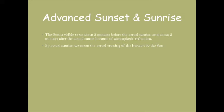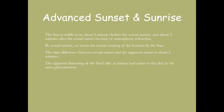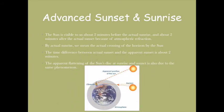Similarly, we have another phenomenon of advanced sunset and sunrise, which means the sun is visible to us about two minutes before the actual sunrise and two minutes after the actual sunset. By actual sunrise we mean the actual crossing of the horizon by the sun. This is because of the atmosphere and its varying refractive index.